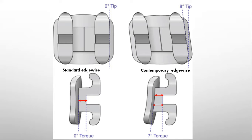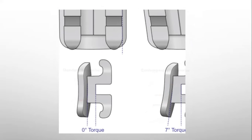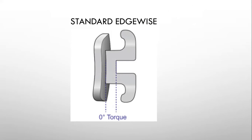The size of the slot is same in both the systems. Whether it's standard edgewise or contemporary edgewise, the depth of the bracket is approximately 0.028 inch and height of the bracket slot is approximately 0.022 inch.